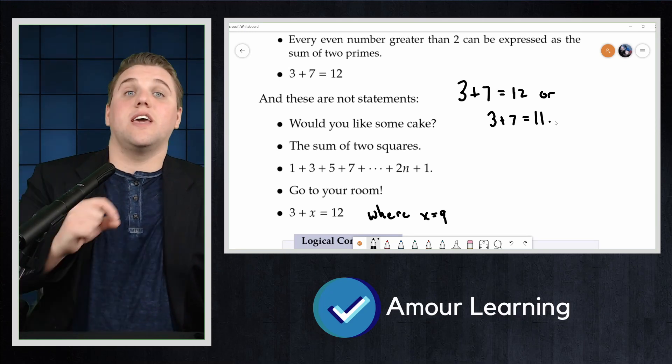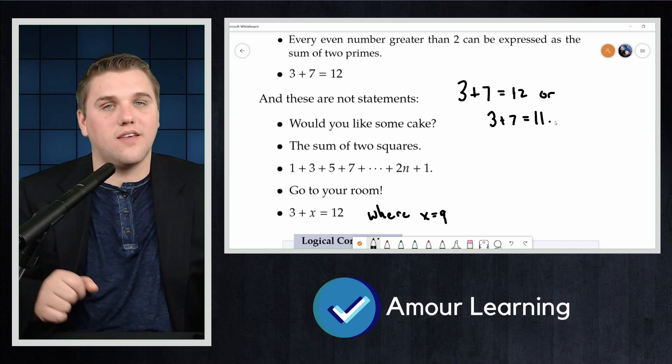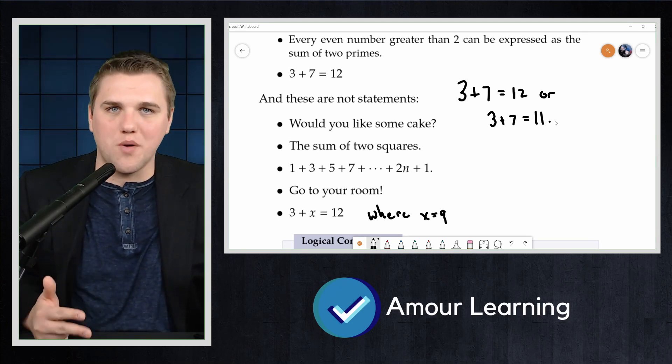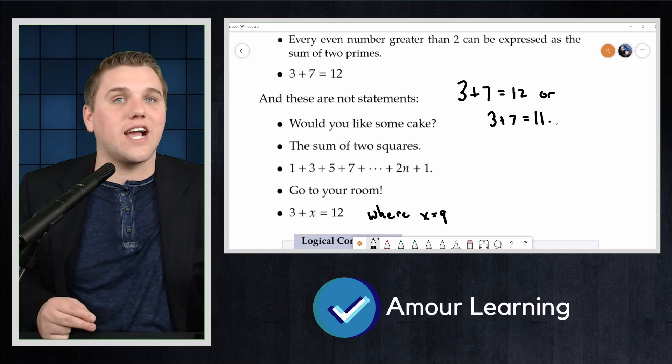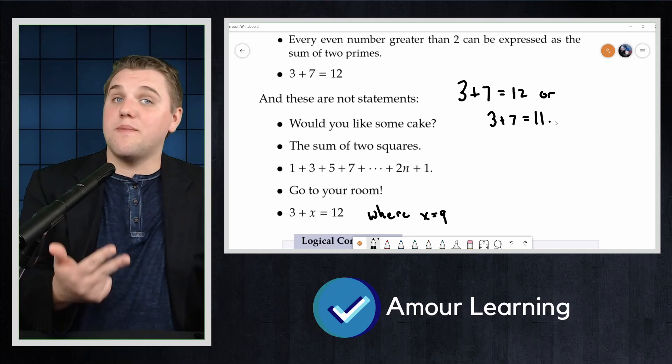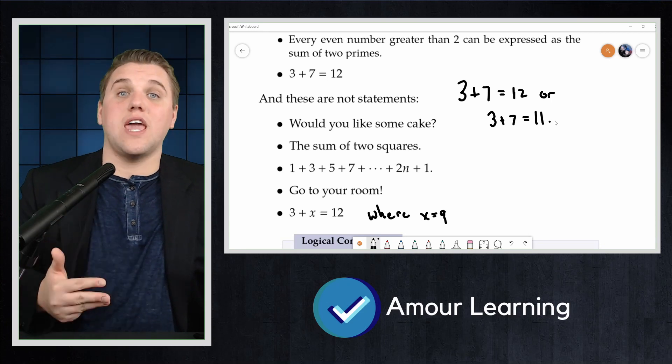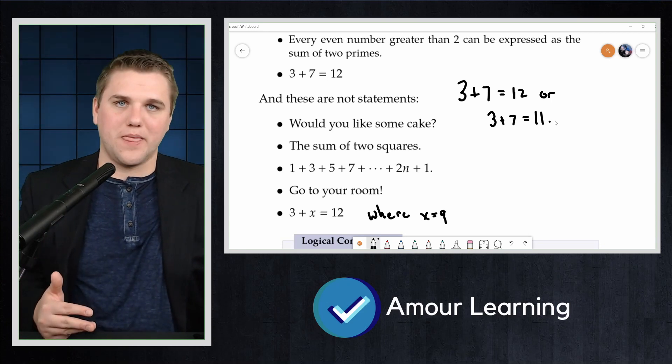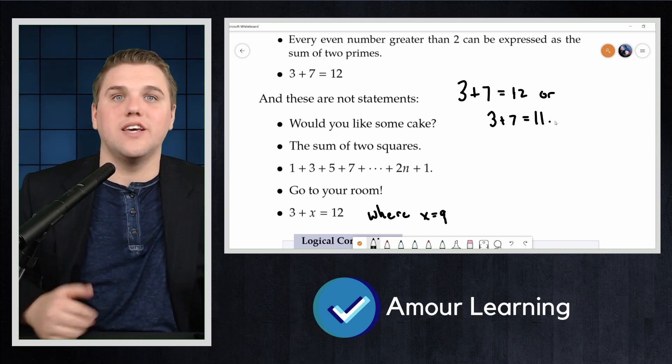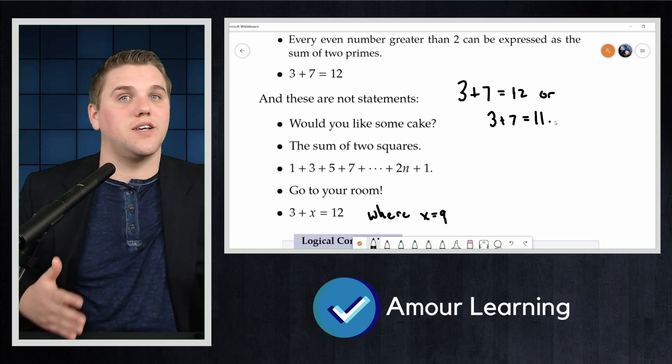The third connective is IF THEN. If Sam is a man, then Chris is a woman. The fourth connective is IF AND ONLY IF. Sam is a man IF AND ONLY IF Chris is a woman. The last connective is NOT. Sam is NOT a man.